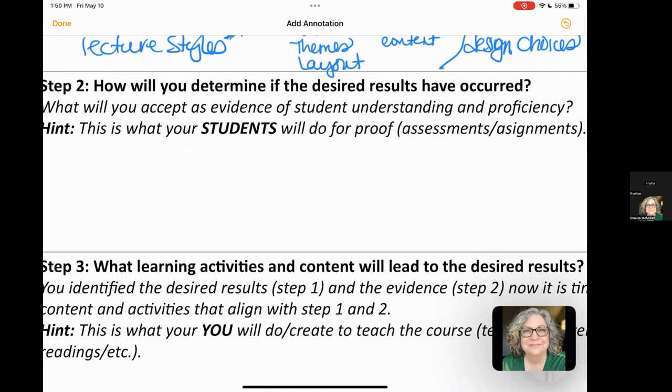Let's talk about step two. In step two, we talk about how we're going to determine if the desired results have occurred. This is what you will accept as evidence of your student understanding and proficiency. So, for example, these are your assessments and assignments. And yes, I do happen to see that typo on assignments. But this is what our students will do for proof.